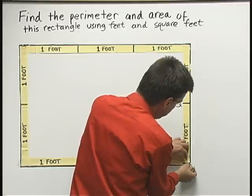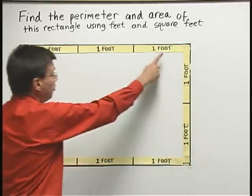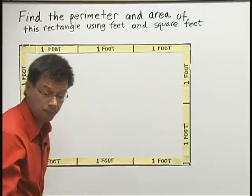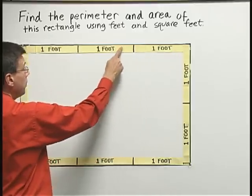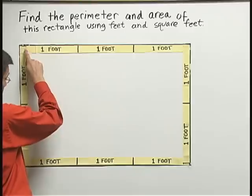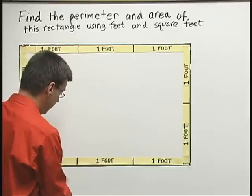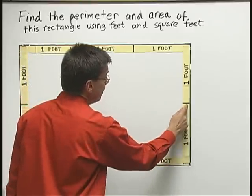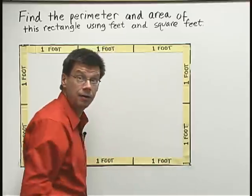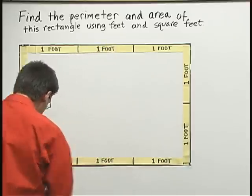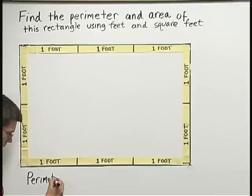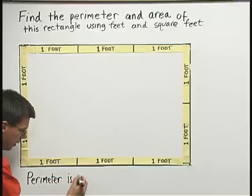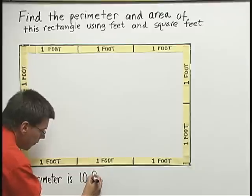So the tape measure that I've placed around the edge of this rectangle measures the perimeter of the rectangle. It's a total of one, two, three, four, five, six, seven, eight, nine, ten feet. The perimeter of this rectangle is ten feet.